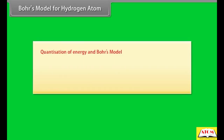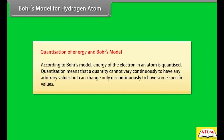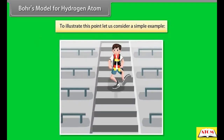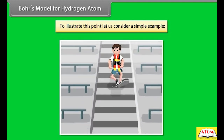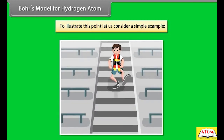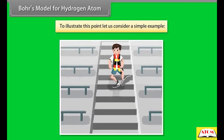Quantization of energy and Bohr's model: According to Bohr's model, energy of the electron in an atom is quantized. Quantization means that a quantity cannot vary continuously to have any arbitrary values, but can change only discontinuously to have specific values. To illustrate, consider a person moving down a staircase — their energy changes discontinuously and can have only certain definite values corresponding to the energies of various steps. Energy of the person in this case is quantized.